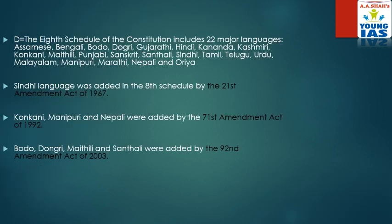Now see the explanation. The 8th schedule of the constitution includes 22 major languages: Assamese, Bengali, Bodo, and so on. Sindhi was added in 1967. Konkani, Manipuri and Nepali were added by the 71st Amendment Act 1992. Bodo, Dongri, Maithili and Santali were added by the 92nd Amendment Act 2003.